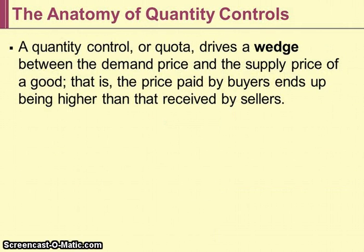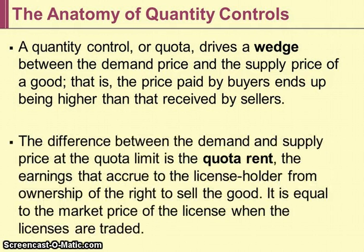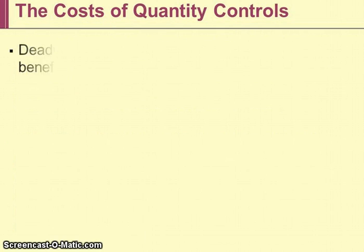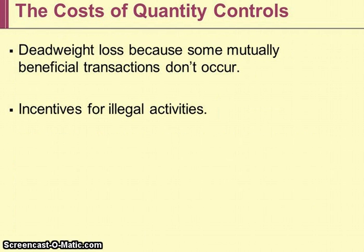A quantity control or quota drives a wedge between the demand price and supply price of a good, so the price paid by buyers ends up being higher than that received by sellers. In the example, buyers were willing to pay $6 per ride and sellers were willing to provide them for $4 per ride. That $2 difference is called quota rent — the earnings that accrue to the license holder from ownership of the right to sell the good. It is equal to the market price of the license when licenses are traded. The costs of quantity controls include deadweight loss, because some mutually beneficial transactions don't occur, resulting in loss of some producer and consumer surplus.